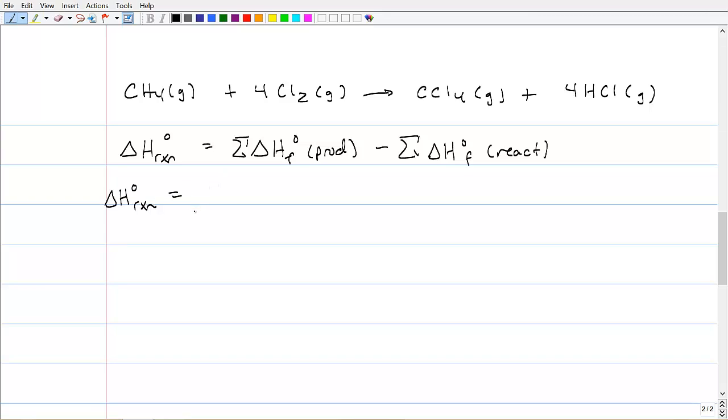There's one CCl4 being formed. So I'd write the enthalpy of formation of CCl4, a product. I would add to it four enthalpies of formation of HCl.